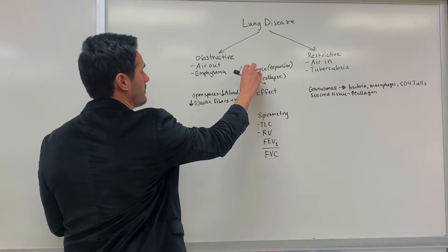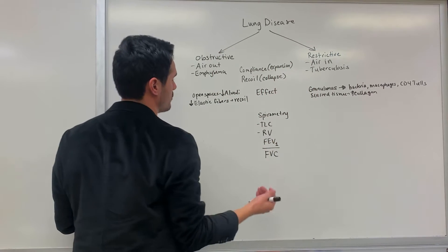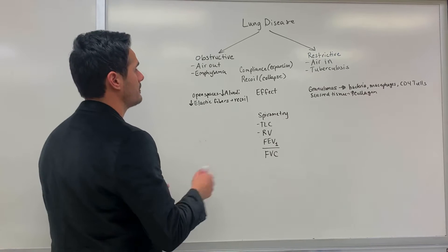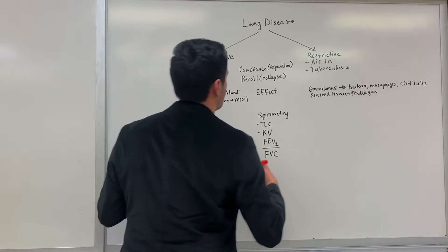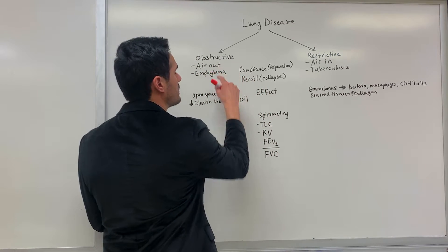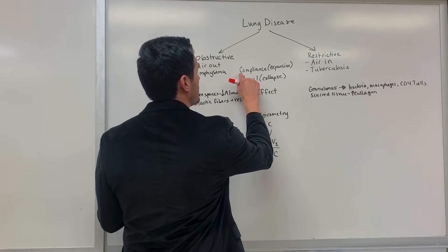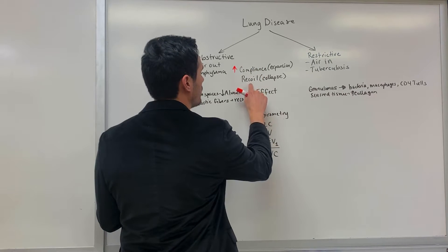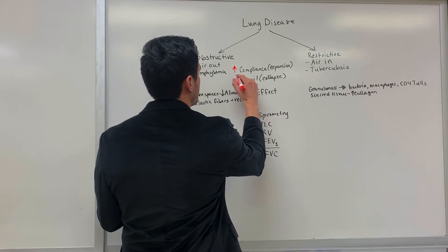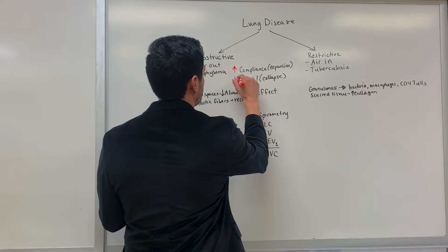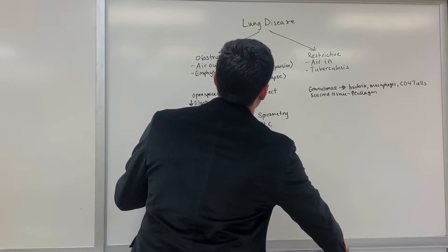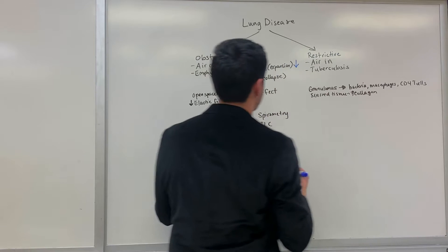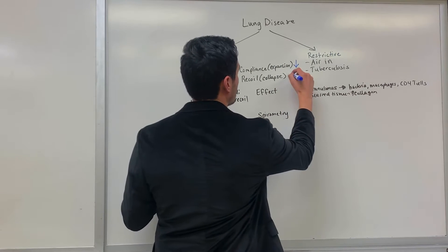These two variables are going to be different in obstructive versus restrictive lung disease. With obstructive — more specifically emphysema — because it's difficult to get air out, there is increased compliance, but the recoil (collapse) is going to be decreased. For restrictive, there's going to be decreased compliance because it's difficult to get air in, but the recoil is going to be increased.